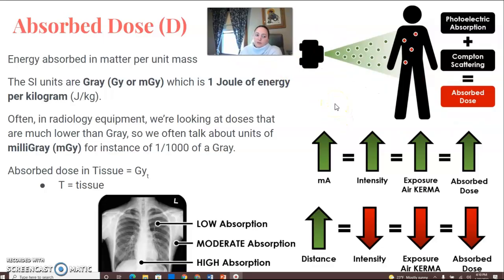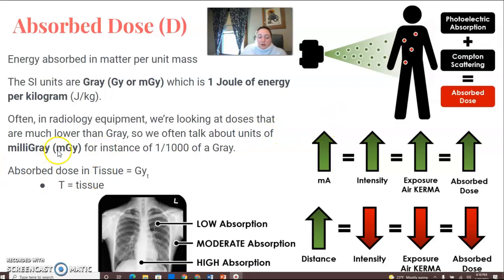The absorbed dose is the energy absorbed in matter per unit mass. The SI units are gray or milligray, which equals one joule of energy per kilogram. In radiology, we look at doses much lower than one gray, so we usually talk about milligray, which is one one-thousandth of a gray.